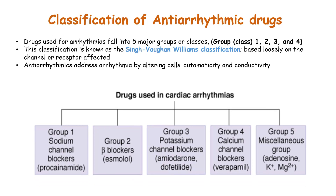Anti-arrhythmic drugs are classified into five major groups or classes. This classification is known as the Vaughan-Williams classification, which focuses on the channels or the receptors that are affected by these drugs. Anti-arrhythmic drugs address arrhythmias by altering the automaticity and conductivity of the heart cells. The five groups are: group one — sodium channel blockers, group two — beta blockers, group three — potassium channel blockers, group four — calcium channel blockers, and group five — miscellaneous drugs.